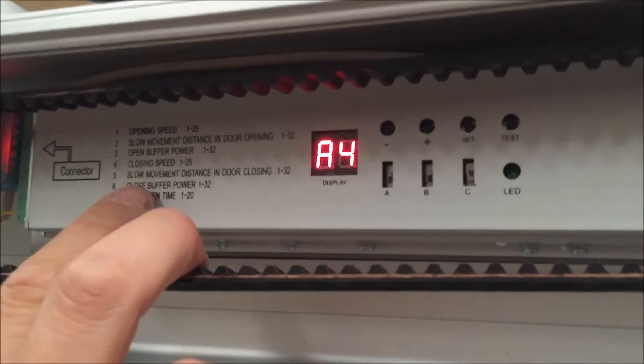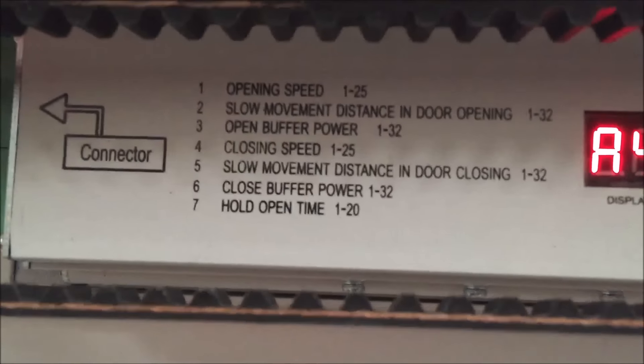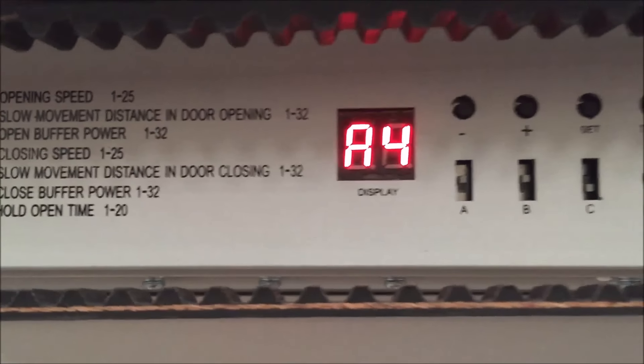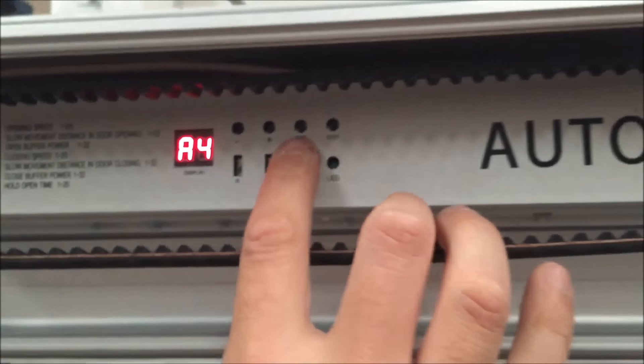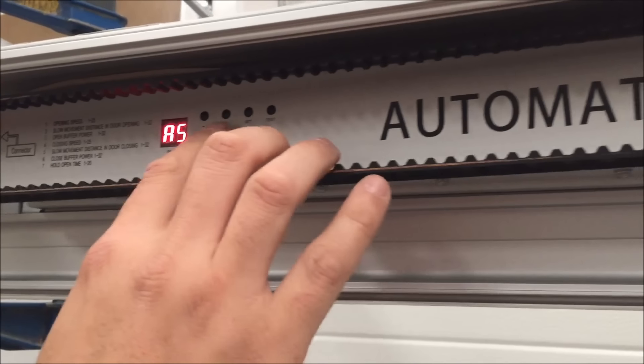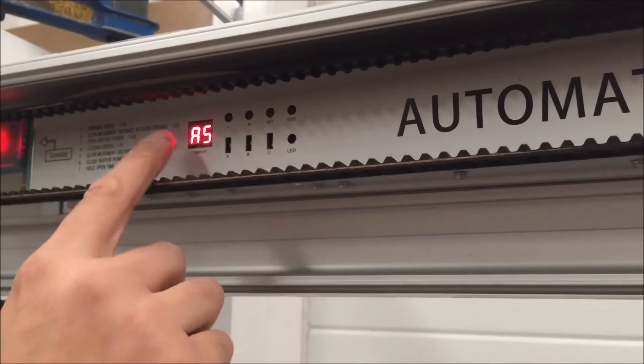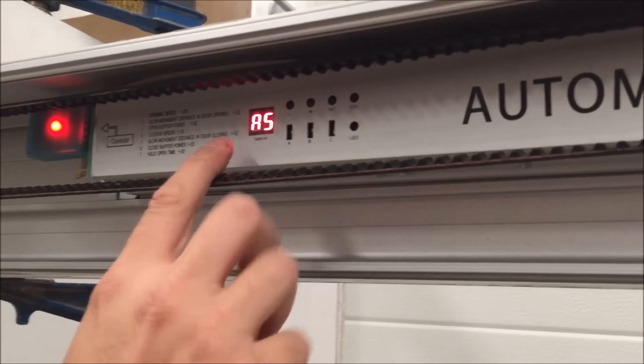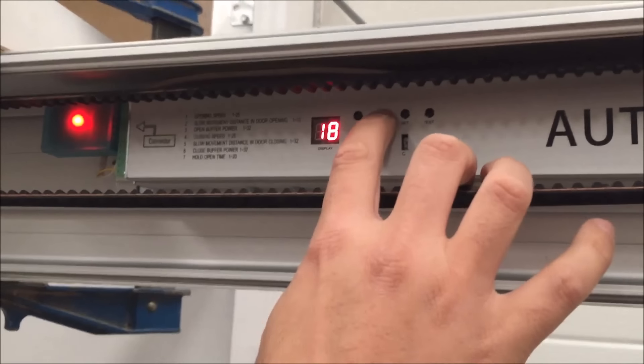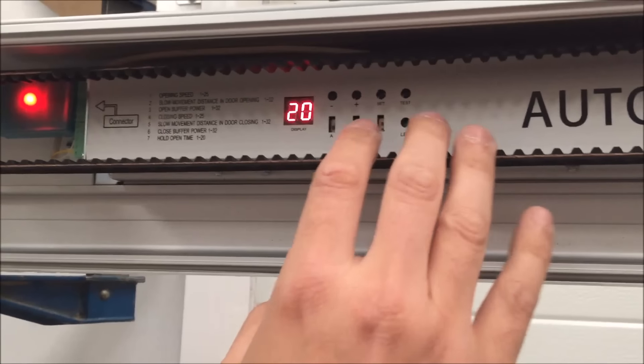Para el menú 5, que es la distancia del movimiento lento cuando la puerta está cerrando, seguimos el mismo paso, pulsamos el botón set para irnos al menú 5 y seleccionaremos el valor que queramos dentro del rango 1 a 32. Aquí por ejemplo vamos a subir hasta el número 20 por ejemplo.